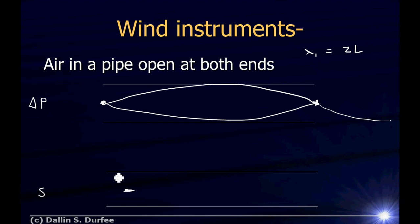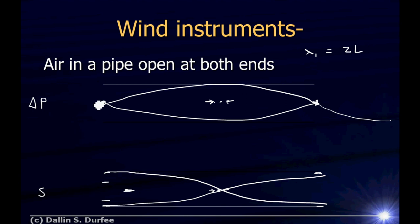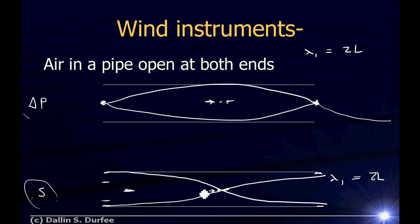We can also think in terms of displacement. At the ends, it's really easy for the air to move back and forth, so we get a displacement antinode at the edges. In the middle, we get a displacement node — the air is moving in from both sides, squishing the air at the middle, making pressure go high. Since it's being squished from both sides it can't go anywhere, so we get a displacement node at the center. So this is the same wave — I'm just plotting two different aspects: change in pressure versus displacement. In a standing wave in air, wherever there's a pressure antinode, there's a displacement node, and wherever there's a pressure node, there's a displacement antinode.